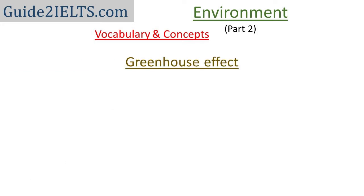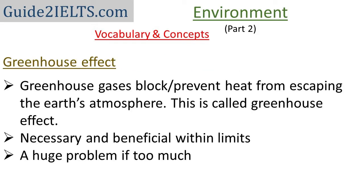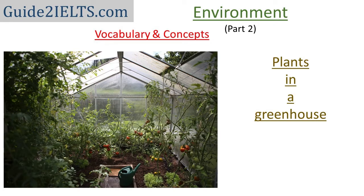From greenhouse gases comes the term greenhouse effect. Certain gases in the earth's atmosphere block heat from escaping from the earth — this is called the greenhouse effect. Within limits, that's a good thing. But if there is too much of these gases, it leads to excessive warming of the earth's atmosphere. These gases keep the earth warm like the glass in a greenhouse keeps plants warm.